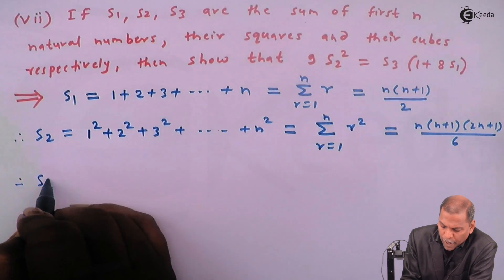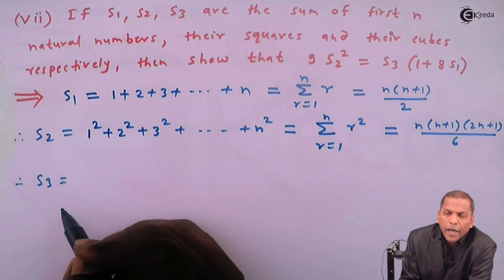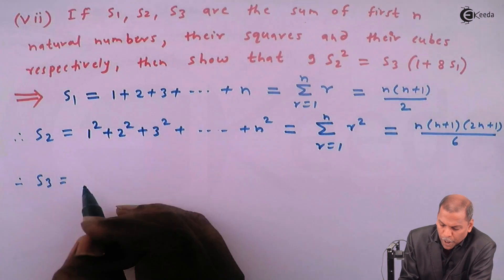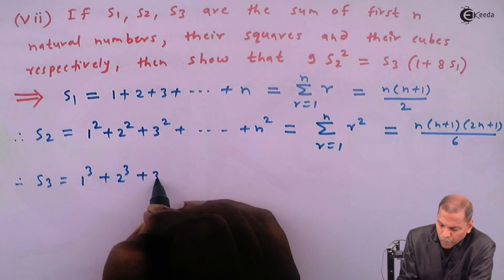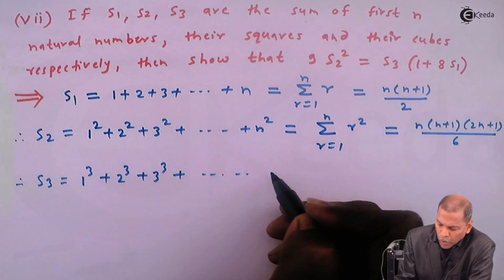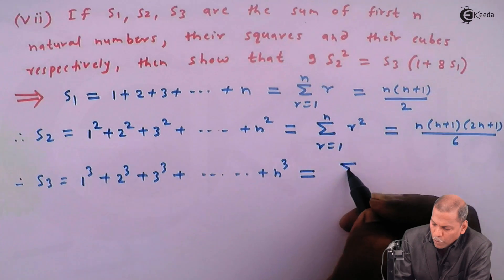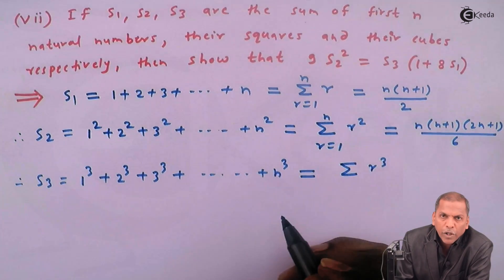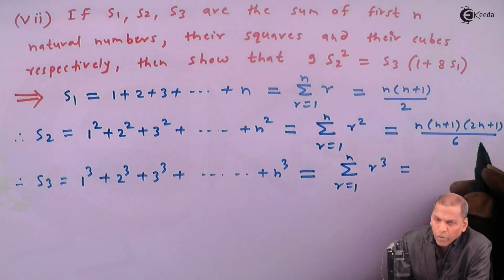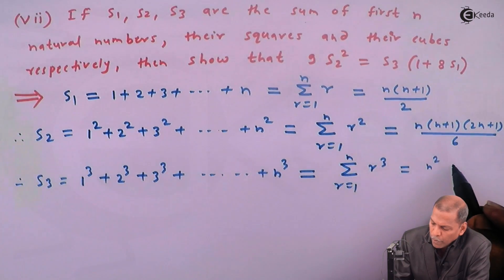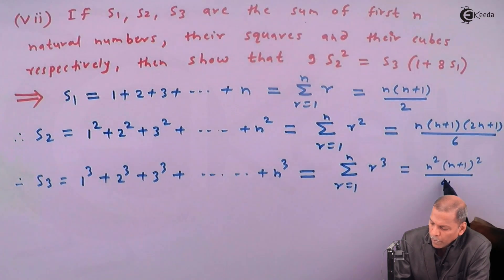On the same line, S3 gives the sum of cubes of the first n natural numbers. It means S3 = 1³ + 2³ + 3³ + ... + n³, which in sigma notation is the sum of r³ from r = 1 to n, and that equals n²(n+1)²/4.